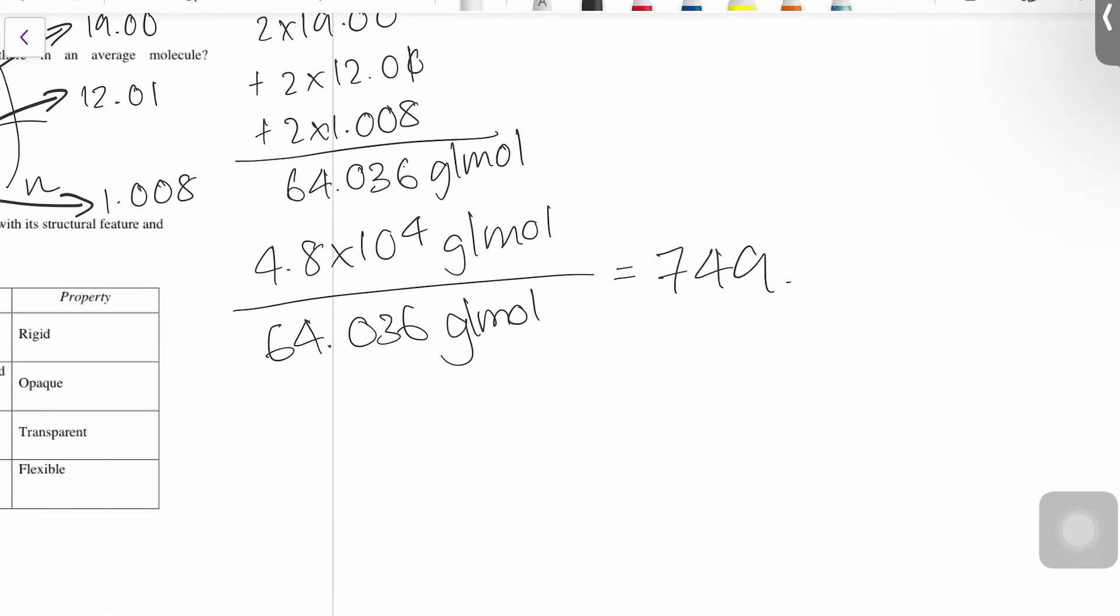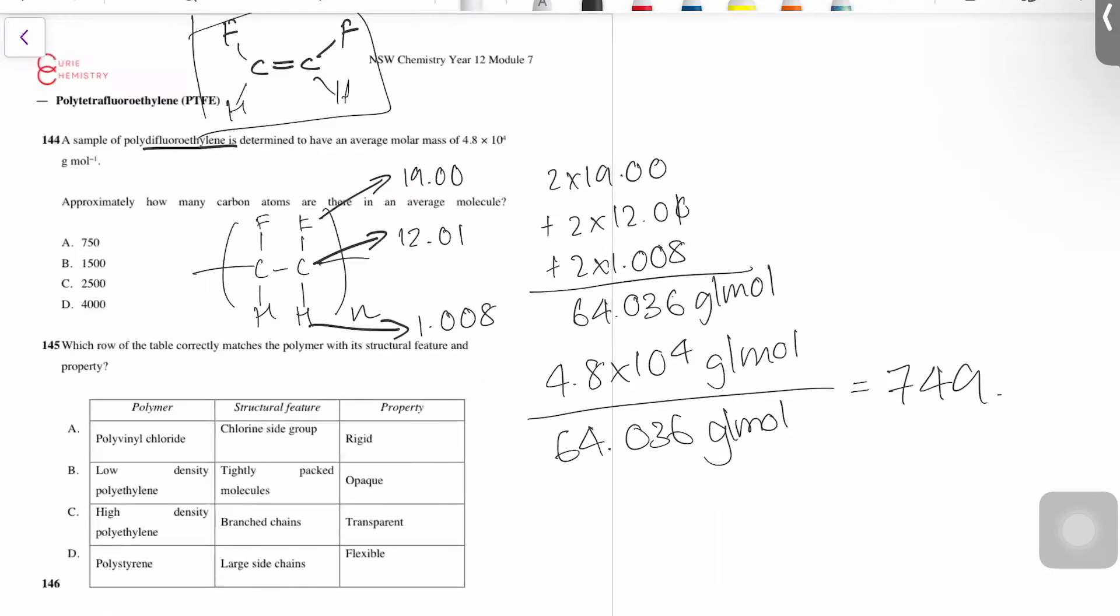So about 750. Now, does that mean there's 750 carbon atoms? So 750 is the amount of times my monomer goes into my polymer, but my monomer actually has two carbon atoms each.